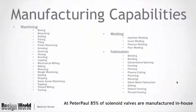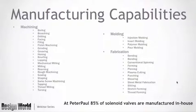Our manufacturing capabilities include machining (boring, broaching, drilling, facing, filing, finishing, grinding, grooving, honing, knurling, etc.). Molding capabilities are injection molding, insert molding, polymer molding, and core molding. We have fabrication capabilities including bending, bonding, forming, piercing, shearing, and more. At Peter Paul, 85% of solenoid valves are manufactured in-house.